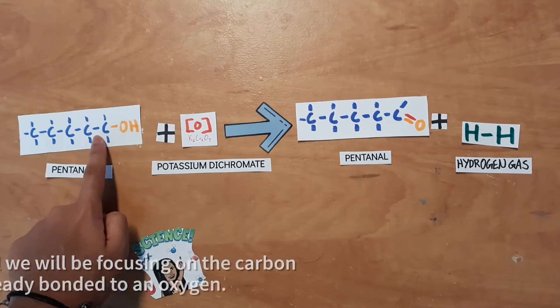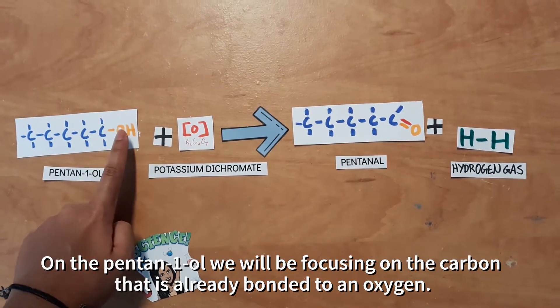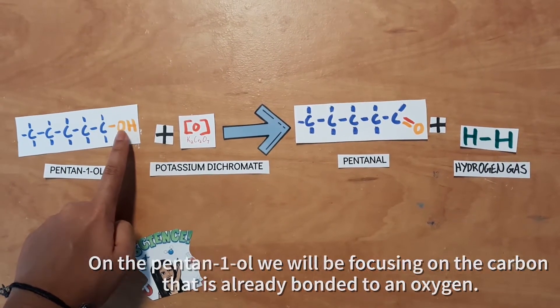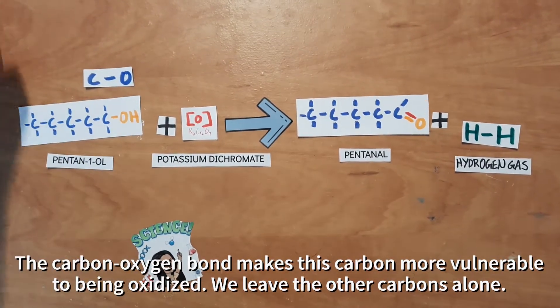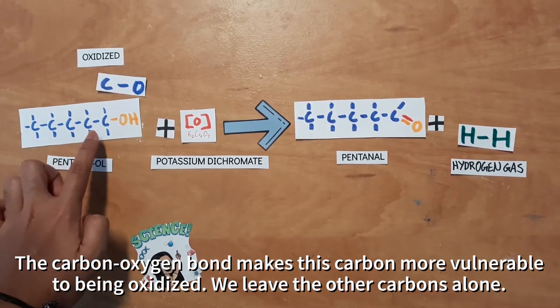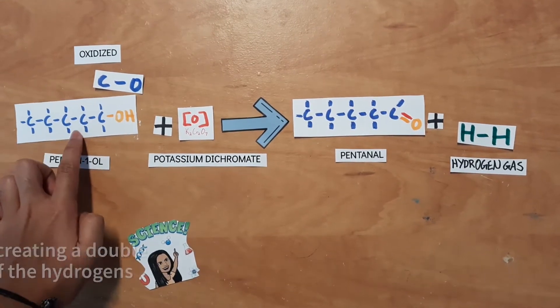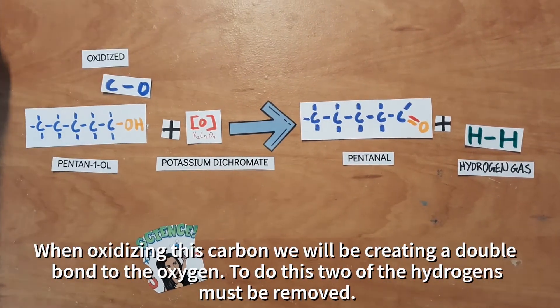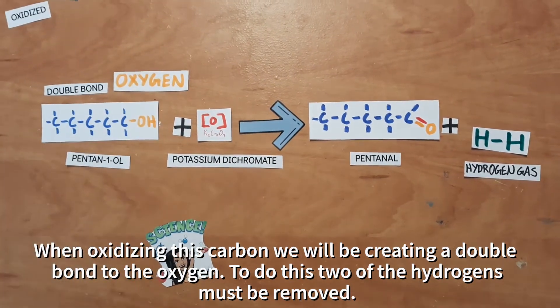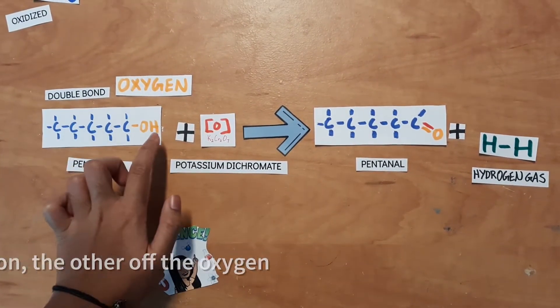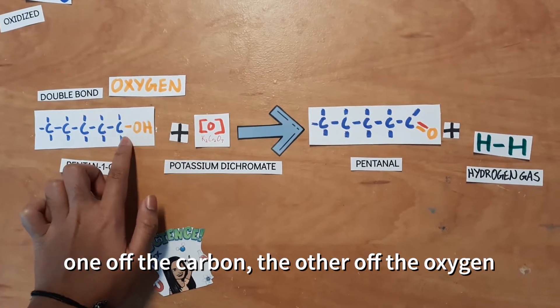On the pentan-1-OL, we will be focusing on the carbon that is already bonded to the hydroxyl group. This carbon-oxygen bond makes this carbon more vulnerable to being oxidized, so we leave the other carbons alone. When oxidizing this carbon, we will be creating a double bond to the oxygen. To do this, two of the hydrogens must be removed. One must be removed off the carbon, and the other off the oxygen.